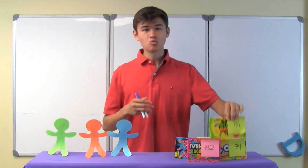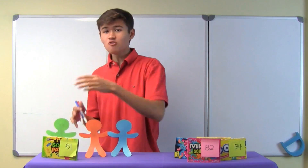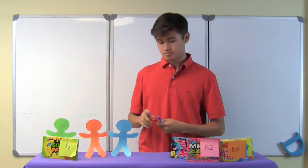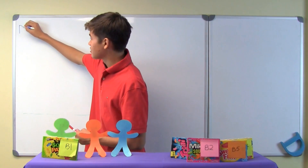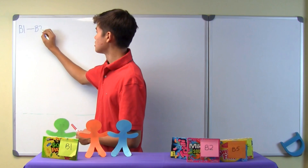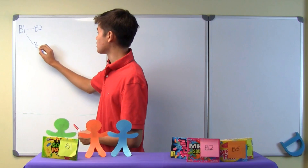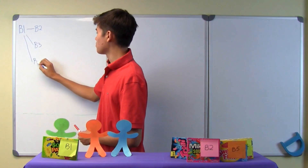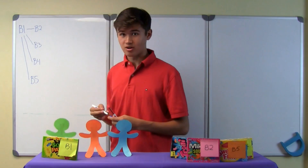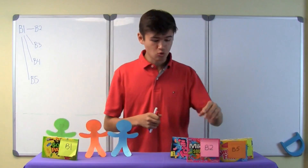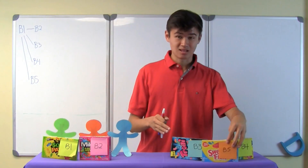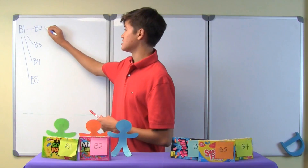Let's start by giving B1 to the first winner. If we give B1 to the first winner, then we have four choices for the second winner. We can give B2, or B3, or B4, or B5 to the second winner. If we give B2 to the second winner, then we will have three boxes left, and we can use any of these three boxes to give to the third winner.